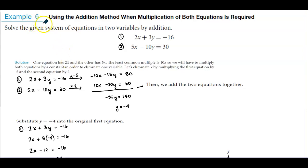In example number six, we're going to use the addition method when multiplication of both equations is required. We're going to solve the given system of equations in two variables by addition. The first equation is 2x plus 3y equals negative 16. The second equation is 5x minus 10y equals 30.